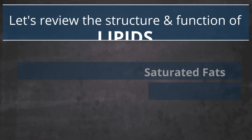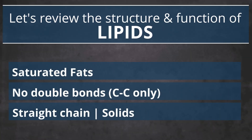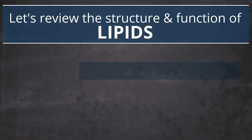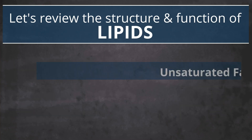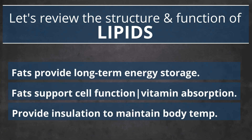Let's do a quick review of lipids. Saturated fats do not have double bonds and tend to be solid at room temperature. Unsaturated fats do have double bonds in the hydrocarbon chain and are often liquids at room temperature. Fats provide energy, support cell functions, and provide insulation.